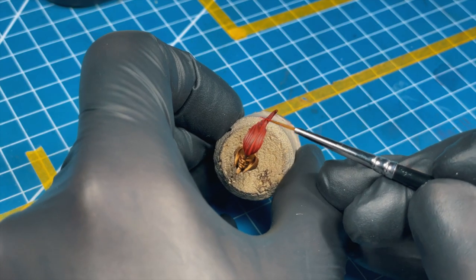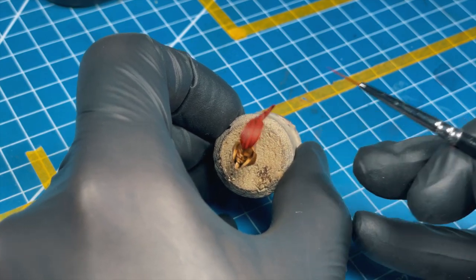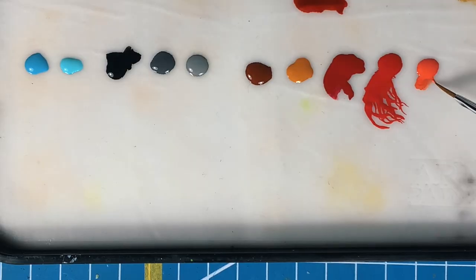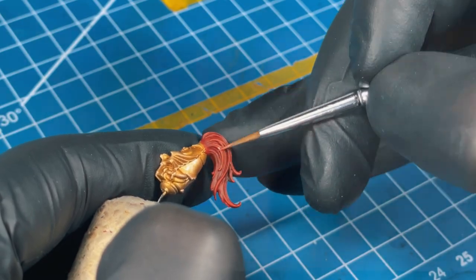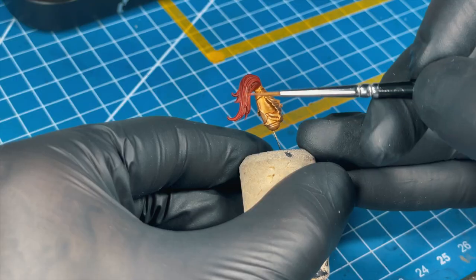We need a second highlight. Grab your Wild Rider Red and place the second highlight in the middle of the first you placed, using a good pointy brush again, 45-degree angle, only the sharpest edges.